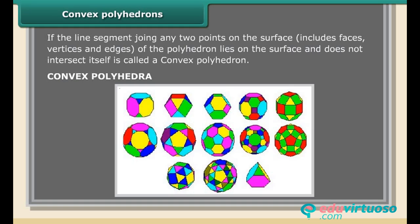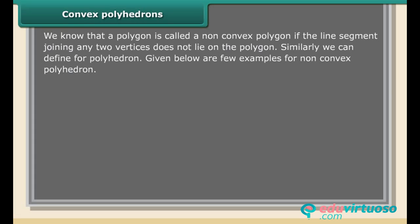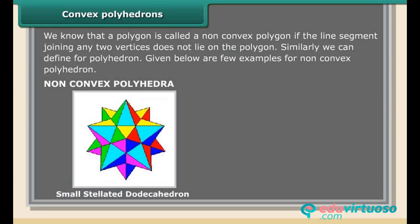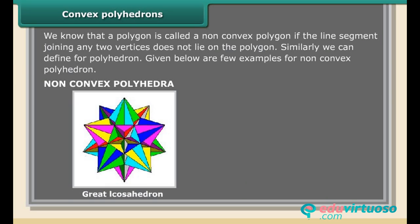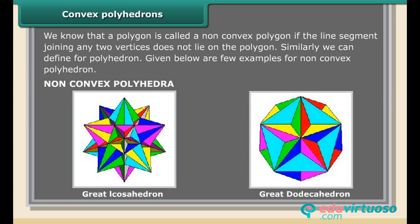We know that a polygon is called a non-convex polygon if the line segment joining any two vertices does not lie on the polygon. Similarly, we can define polyhedron. Given below are a few examples for non-convex polyhedron: small stellated dodecahedron, great stellated dodecahedron, great icosahedron, and great dodecahedron.